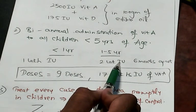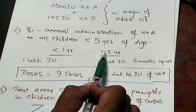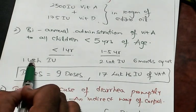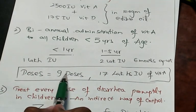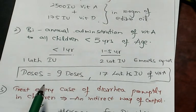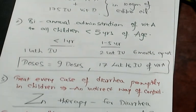Totally how many doses? 2 into 4, 8 doses between 1 to 5 years and 1 dose less than 1 year. Totally 9 doses are being administered. This is what you have to remember.